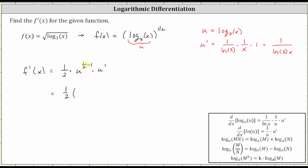u to the power of negative one-half, which gives us log base three of x raised to the power of negative one-half, times u prime. We know u prime is one over natural log three times x.